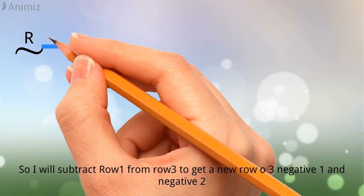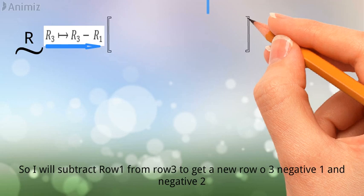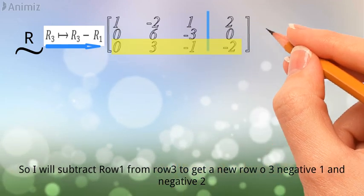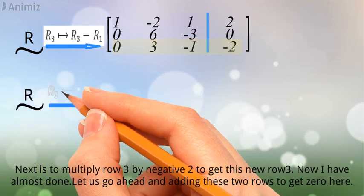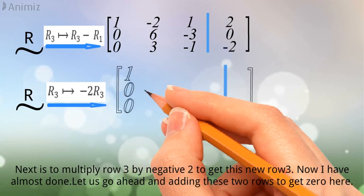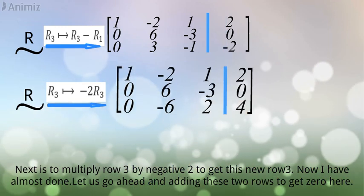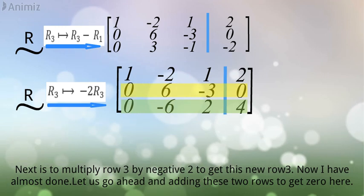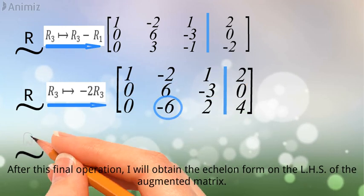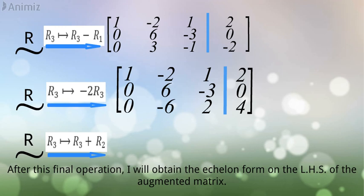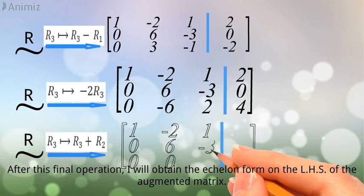So I will subtract row 1 from row 3 to get a new row 0, 3, negative 1, and negative 2. Next is to multiply row 3 by negative 2 to get this new row 3. Now I have almost done. Let us go ahead and adding these two rows to get 0 here. After this final operation, I will obtain the echelon form on the left hand side of the augmented matrix.